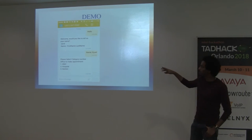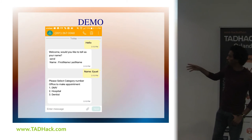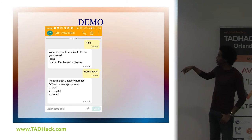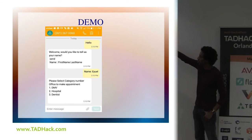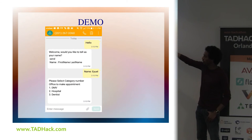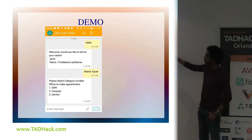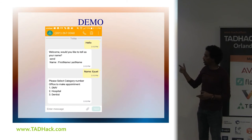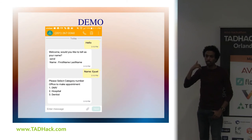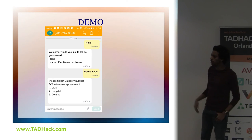I didn't get much time to work on this — I was having issues setting up the Flowroute endpoint. Here are the endpoints I was able to complete: the user texts 'hello,' it prompts for their first name, then they get a list of offices. The application flow is complex, and it might look like a lot of texting, but it's better than waiting on hold. Sometimes you're in the office and can't call — you just text and wait.